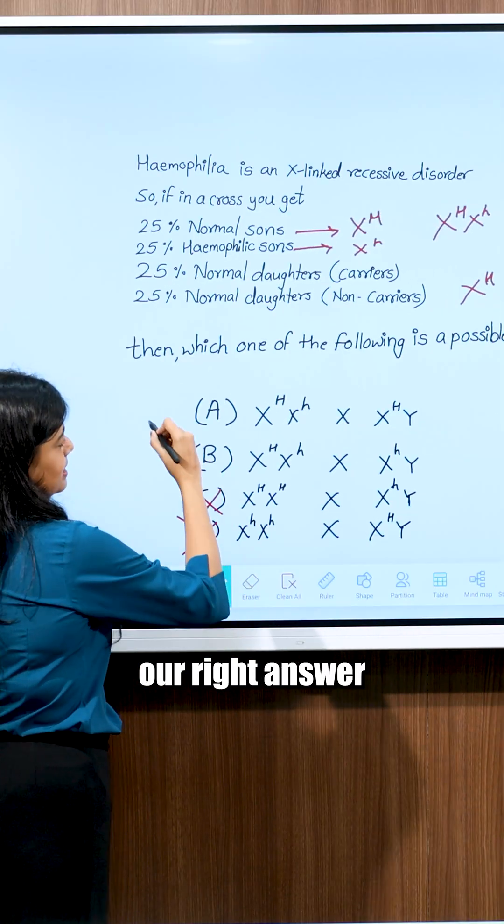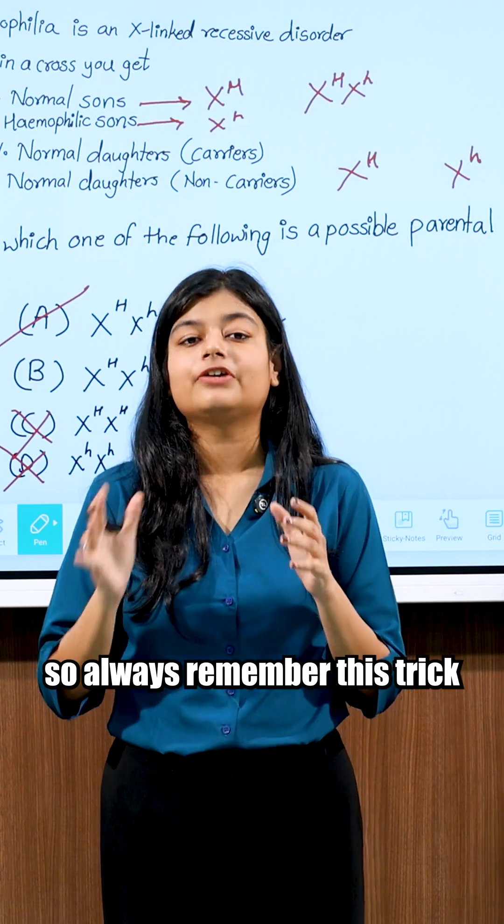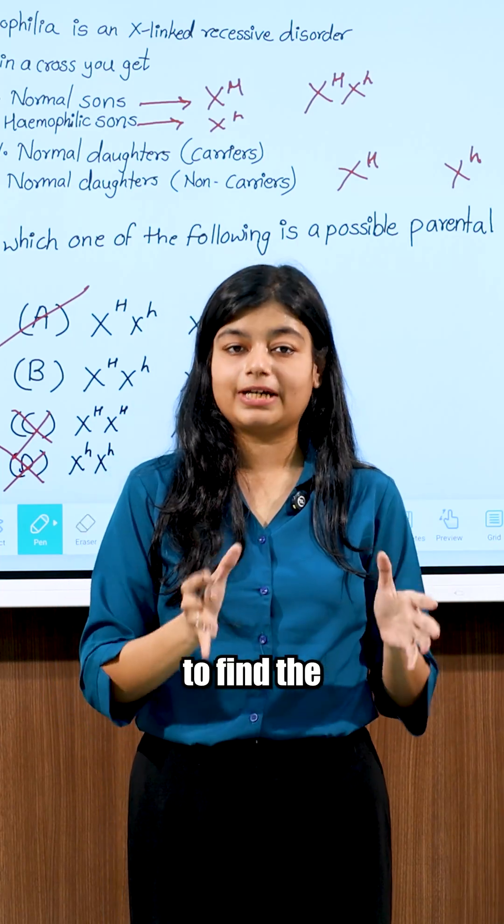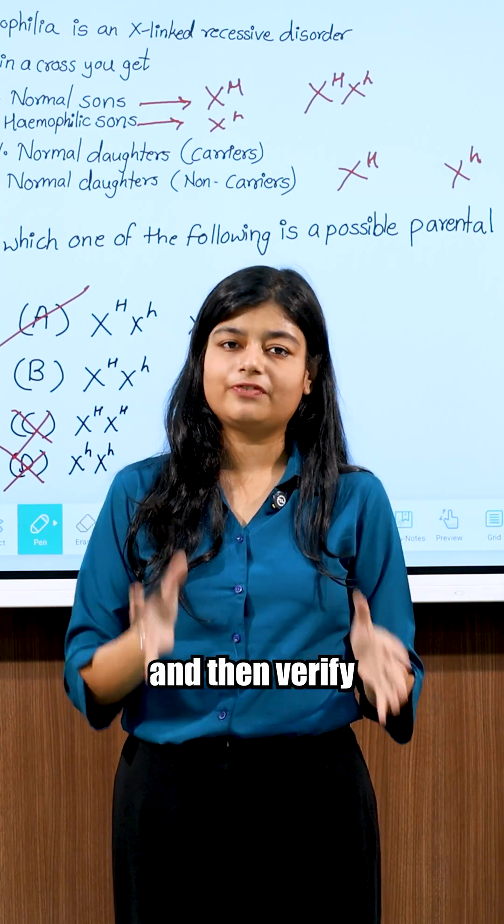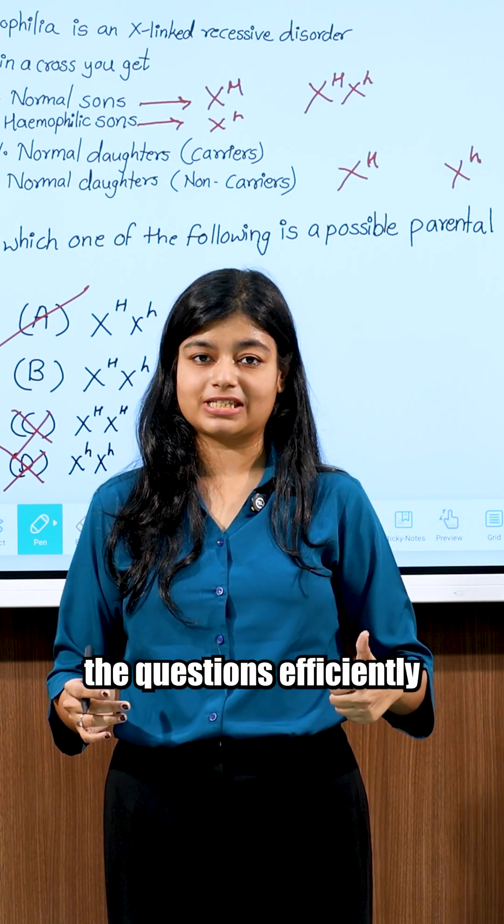This gives us our right answer, option A. So always remember this trick: first, analyze the sons to find the mother's genotype, then verify with the daughters to find the father's contribution. Two logical checks and you've solved the question efficiently.